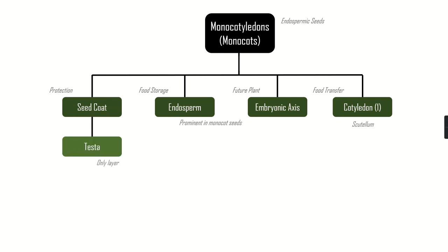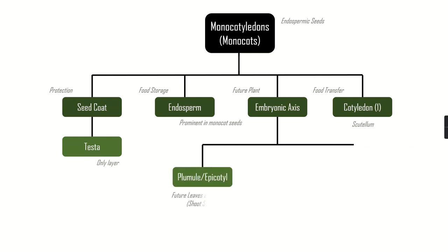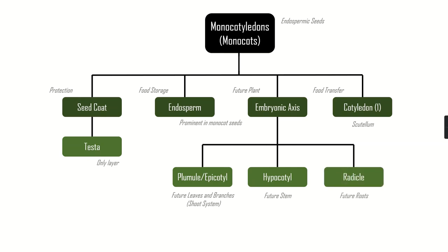The seed coat in the monocot has just one layer because the testa and tegmen have merged, so you only have the testa. The embryonic axis is similar, again with three parts: the plumule and epicotyl, which will become the future leaves and branches — what you call the shoot system; the hypocotyl in the middle of the embryonic axis, which is the future stem; and at the bottom, the future roots, called the radicle.